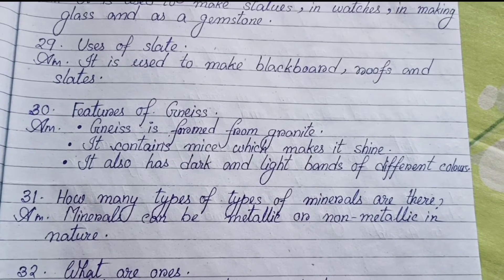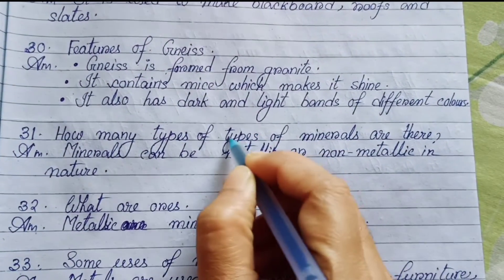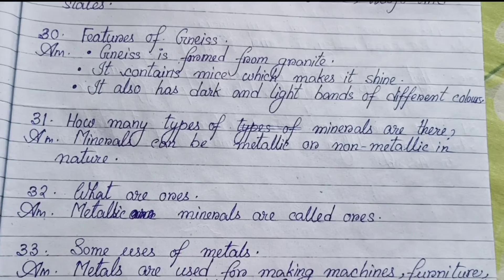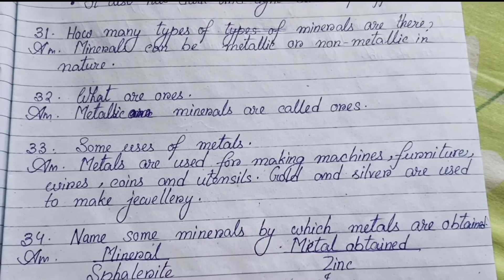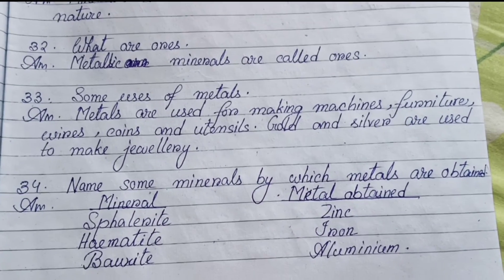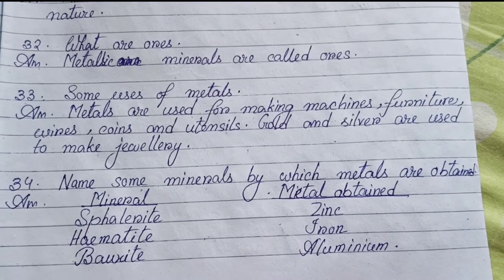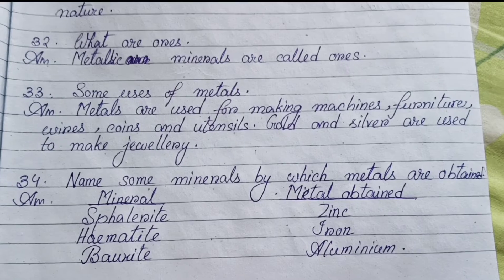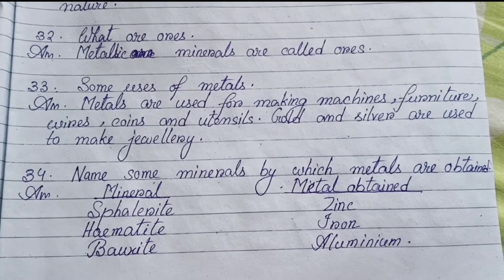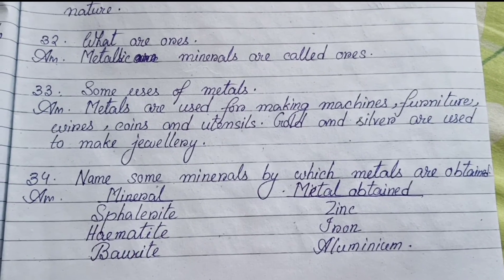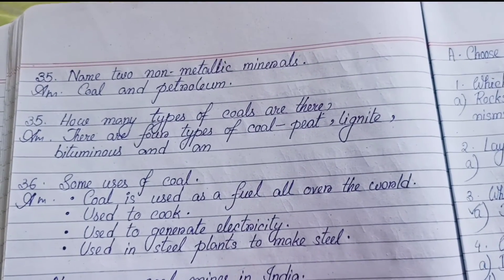Number thirty: Features of gneiss — Gneiss is formed from granite. It contains mica which makes it shine. It also has dark and light bands of different colors. Number thirty-one: How many types of minerals are there? Minerals can be metallic or non-metallic in nature. Number thirty-two: What are ores? Metallic minerals are called ores. Number thirty-three: Uses of metals — Metals are used for making machines, furniture, swords, coins, and utensils. Gold and silver are used to make jewelry.